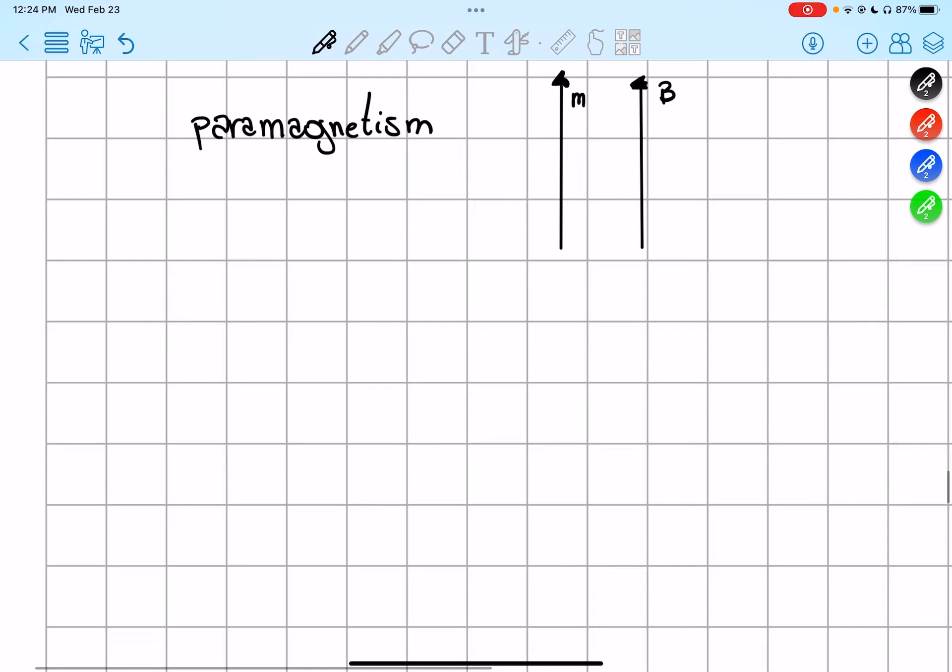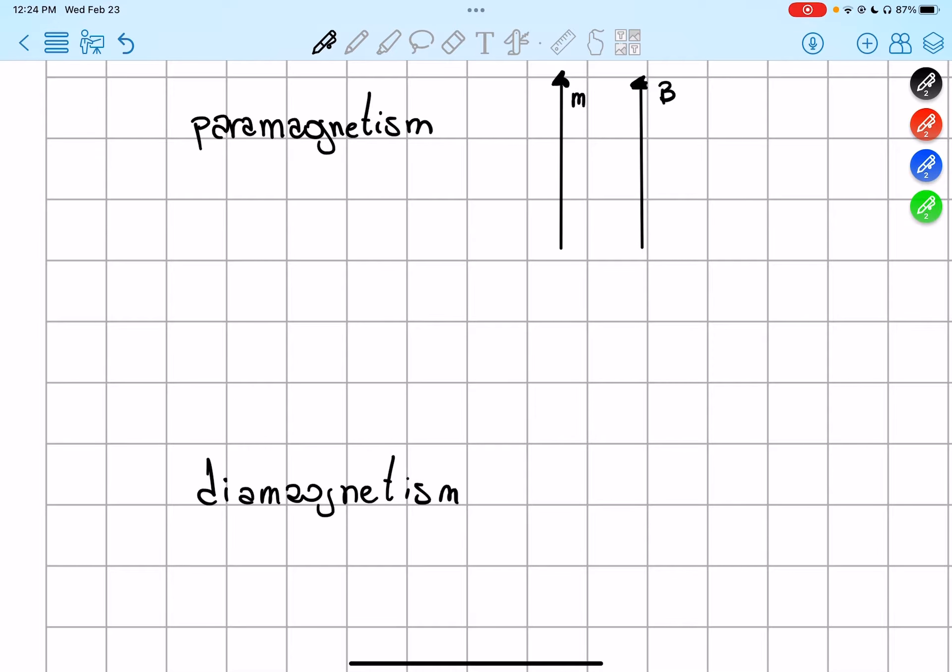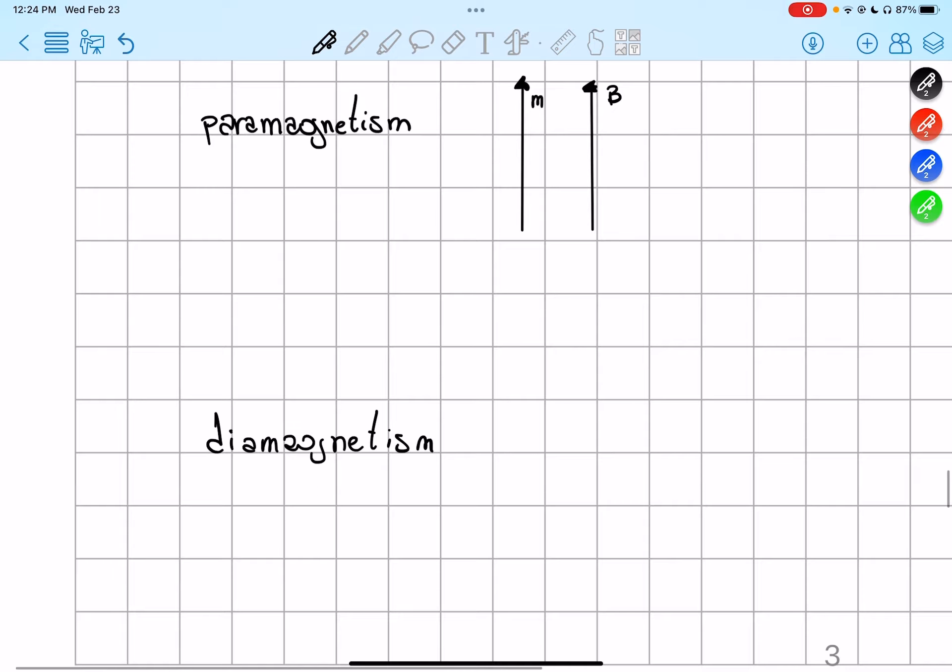And then we have diamagnetism. It is the opposite of paramagnetism. So for example, you have the magnetic moment pointing one way, and you have the magnetic field pointing the other way.